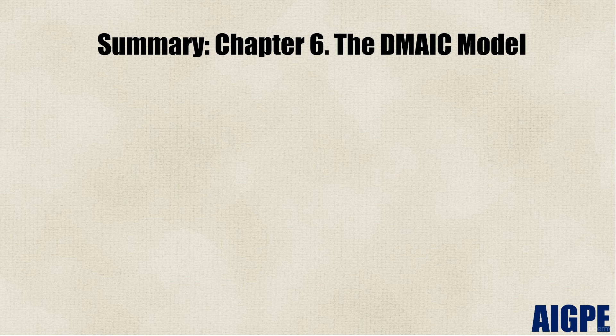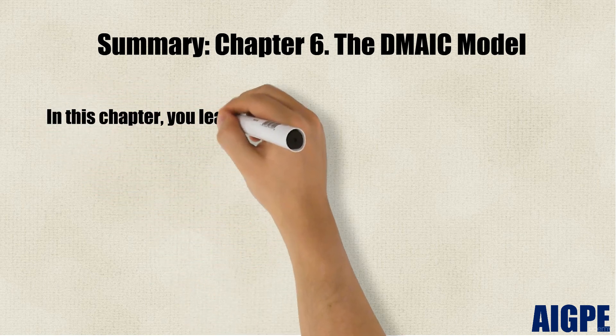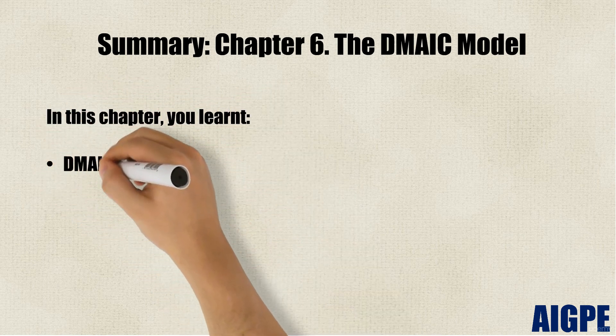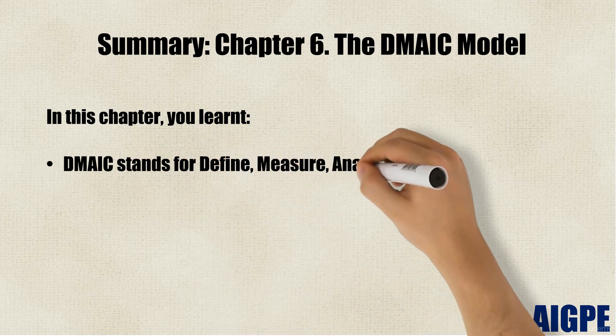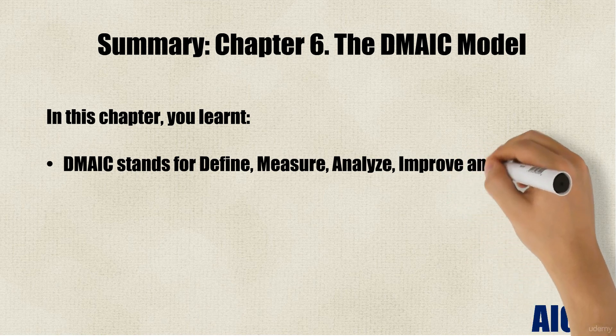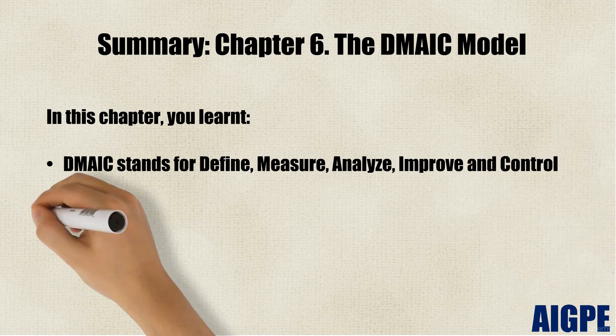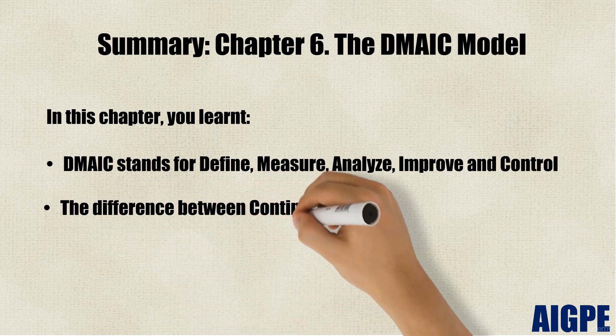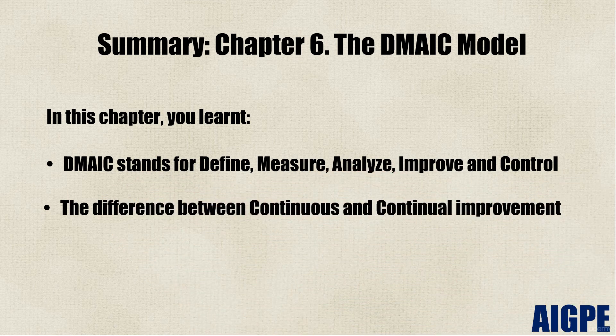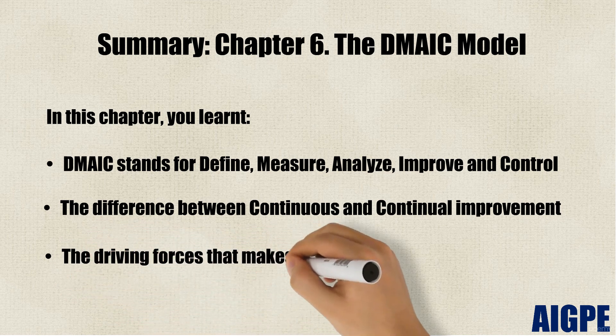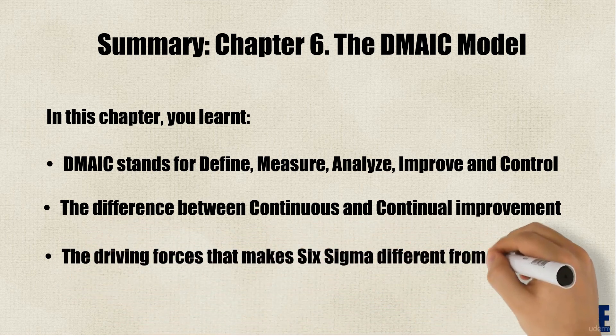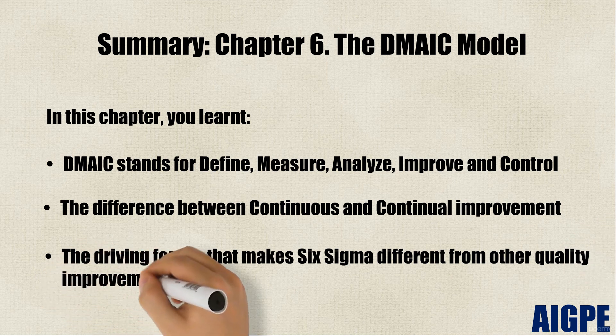In this chapter, you learned DMAIC stands for Define, Measure, Analyze, Improve, and Control. The difference between continuous and continual improvement. The driving forces that make Six Sigma different from all other quality improvement programs.